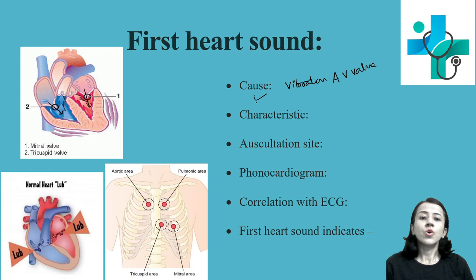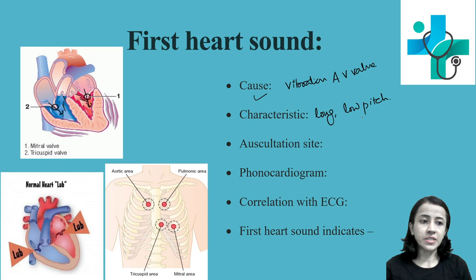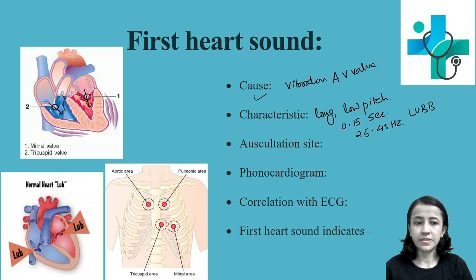What are the characteristics of the first heart sound? It is long and low-pitched, with a duration of about 0.15 seconds and a frequency of about 25 to 45 hertz. It is auscultated as a 'lub' sound — a longer one.